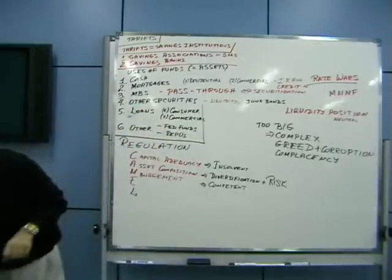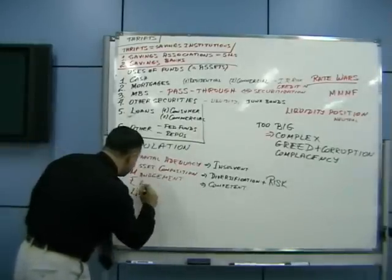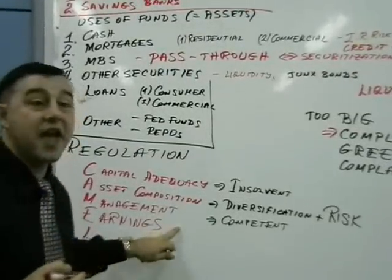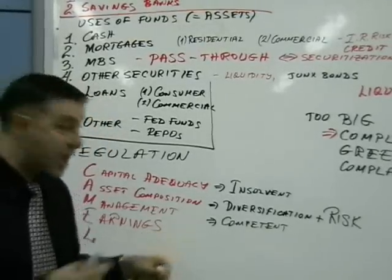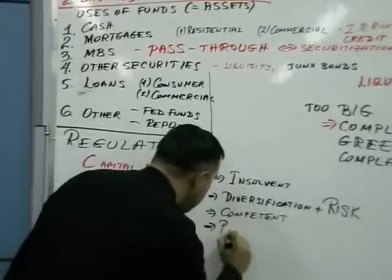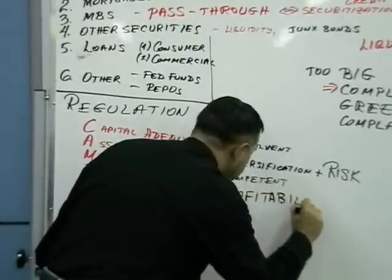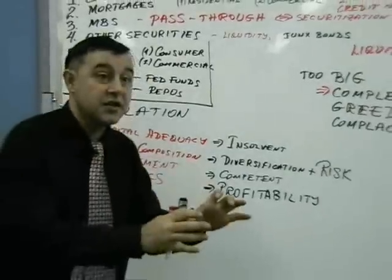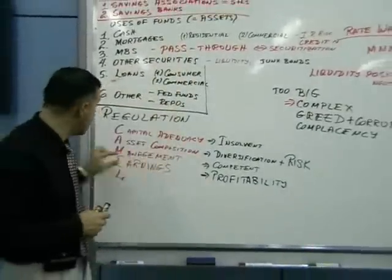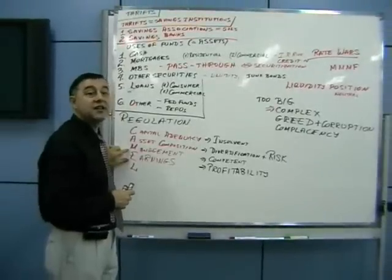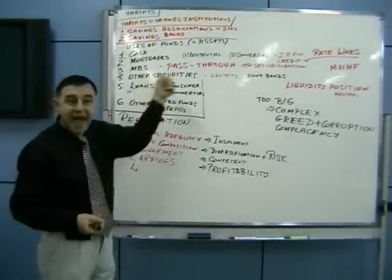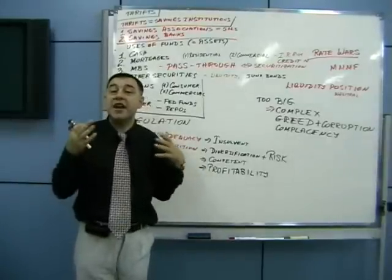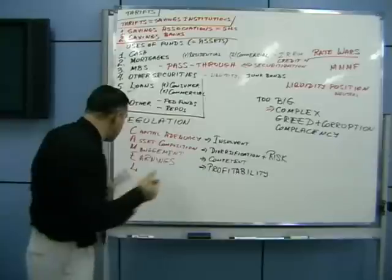Returning to the CAMEL framework: management is what they want to check. The fourth component is earnings — are they profitable or not? Earnings is associated with profitability. If earnings are negative or the company is not profitable, you need to look seriously at what is going on and identify the root cause: was it bad lending, bad management, too much risk? You need to investigate and dig deep.